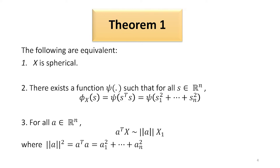Again, x has a spherical distribution is equivalent to stating that for all vector a belonging to the n-dimensional real space, a-transpose x will have the same distribution as sqrt(a-transpose a) times x1, where x1 is the first component of the random vector x. Note that a-transpose a is nothing but the summation of a_i squared for i running from 1 to n.